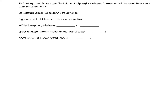The Acme Company manufactures widgets. The distribution of widget weights is bell-shaped, with a mean of 56 ounces and a standard deviation of 7 ounces. Using the standard deviation rule, also known as the empirical rule, we need to find: where 95% of widget weights lie, what percentage lies between 49 and 79 ounces, and what percentage lies above 35 ounces.